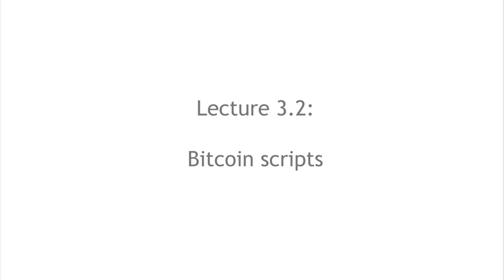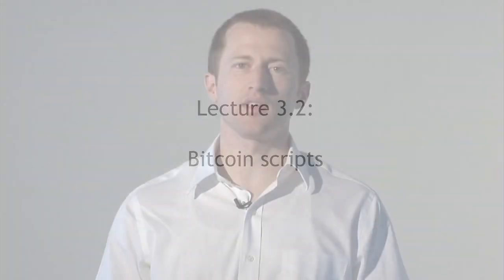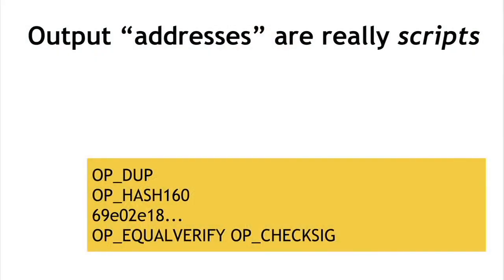Each transaction output doesn't just specify a simple public key — it actually specifies a script. In this section we'll talk about what the Bitcoin scripting language is and why scripts are used instead of simply assigning a public key. The easiest way to understand scripts is by example. The most common script in Bitcoin is to redeem a previous transaction by signing with the correct public key. The output address is really a script — in this case, a script with four instructions.